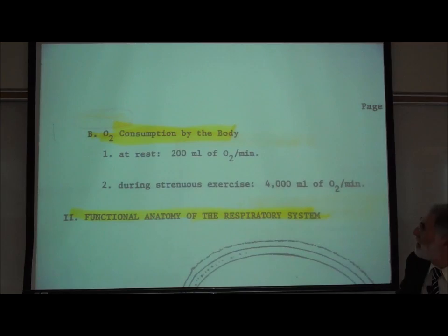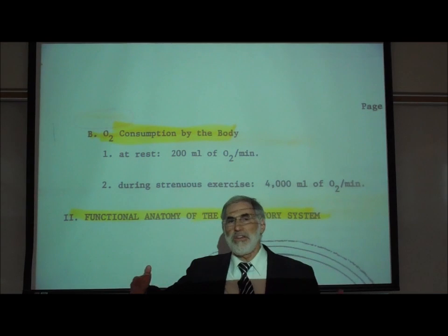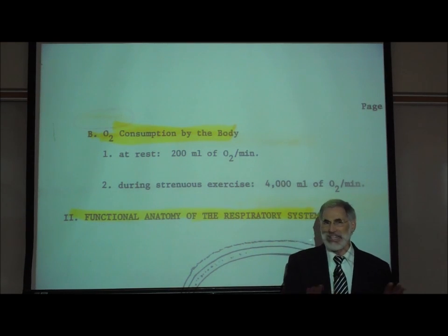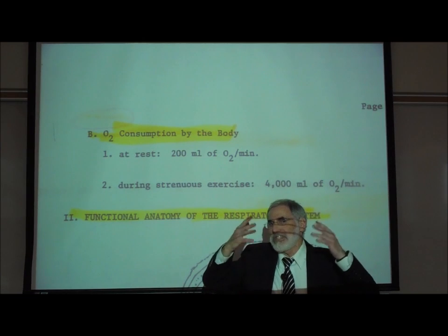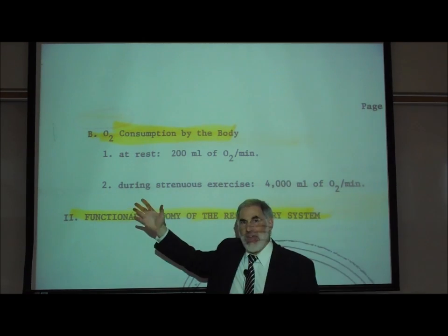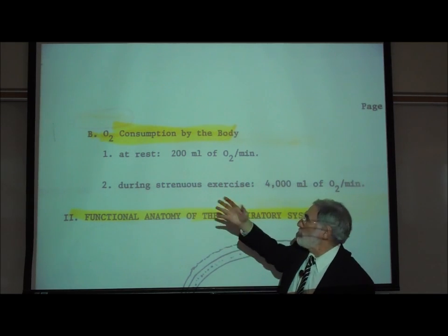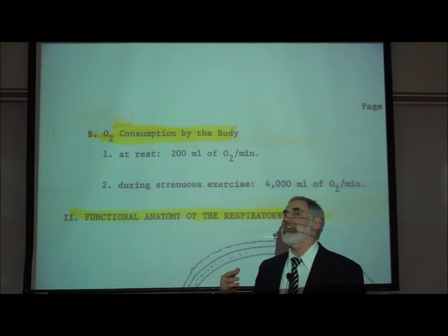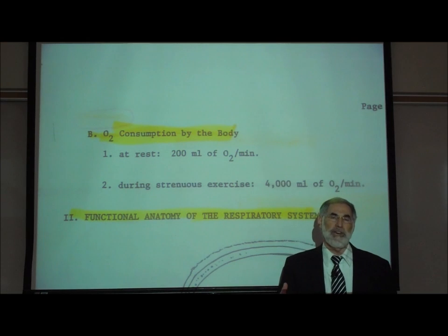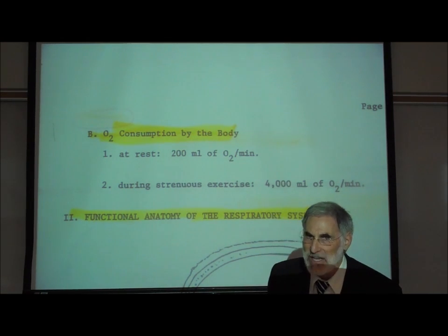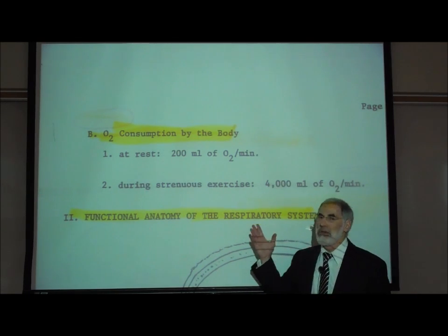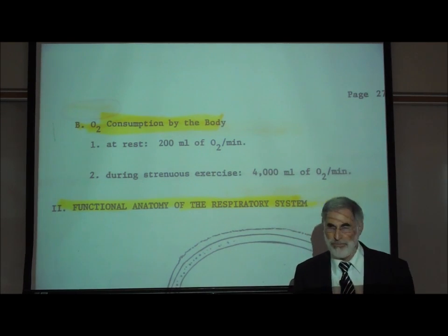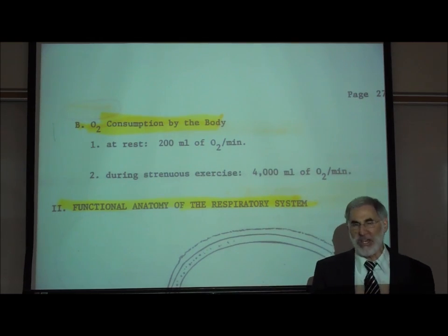On page 274, I've indicated how much oxygen we consume each minute — not for testing, but to show how much it can vary. At rest, we typically consume about 200 milliliters of oxygen per minute in cellular respiration. During strenuous exercise, when our metabolic rate speeds up, we may use up to 4,000 milliliters of oxygen each minute.